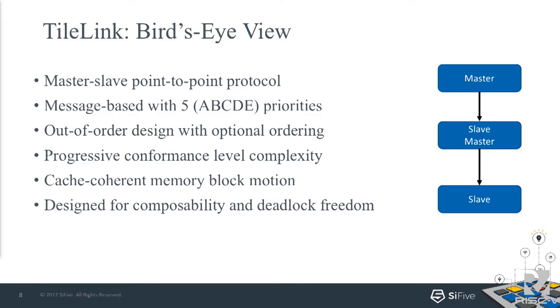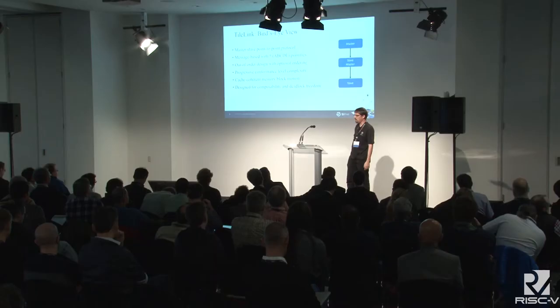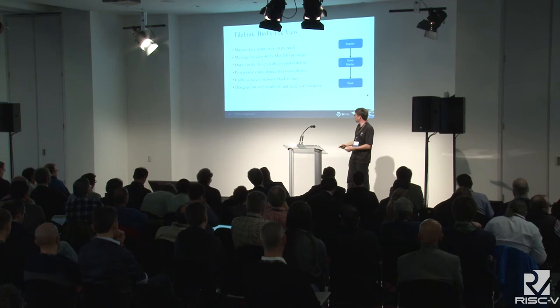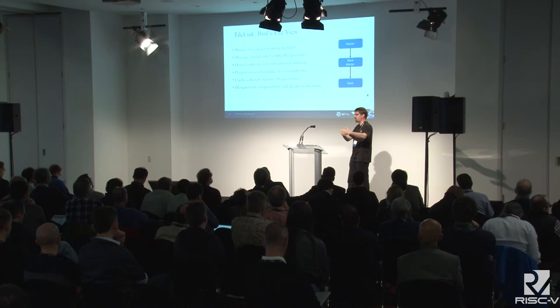Since we want a simple standard, it's important to have conformance levels so that we can start from very simple devices and those can still speak TileLink, and you can go all the way up to an interstitial cache and implement that with the same protocol. The protocol has steps so you can choose how much of it you're going to implement. And of course it has to be coherent. The nice property we inherited from academia was that it had already been analyzed to be deadlock-free, and it was written in a way that you could compose multiple cache levels and still have these nice properties.